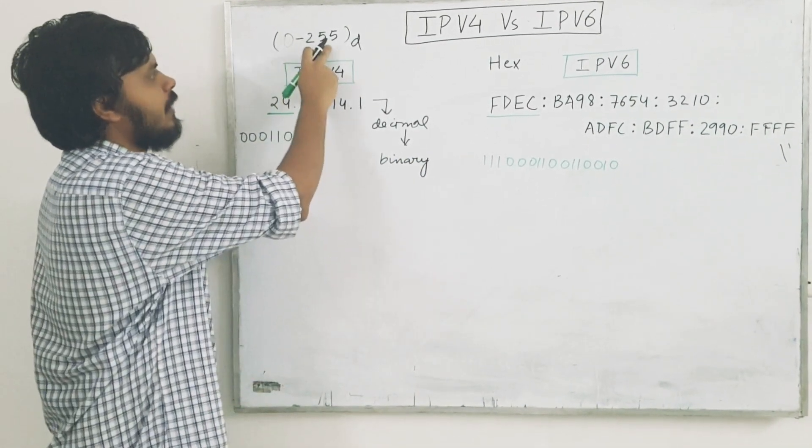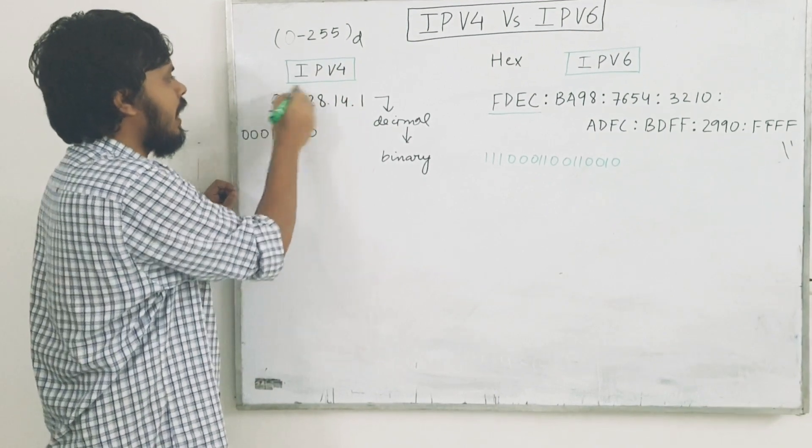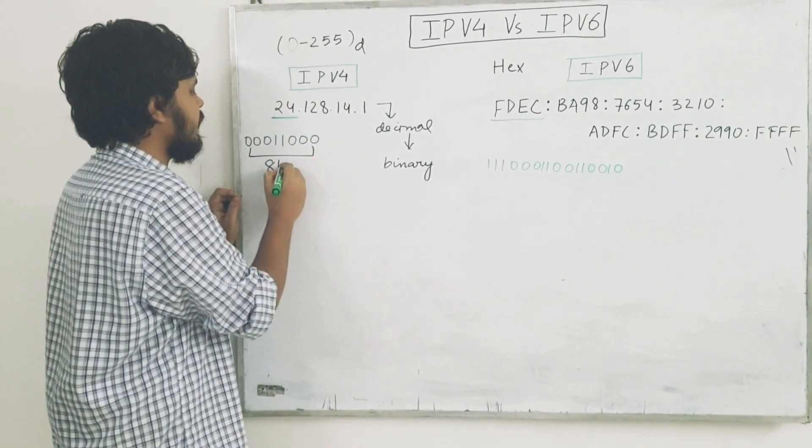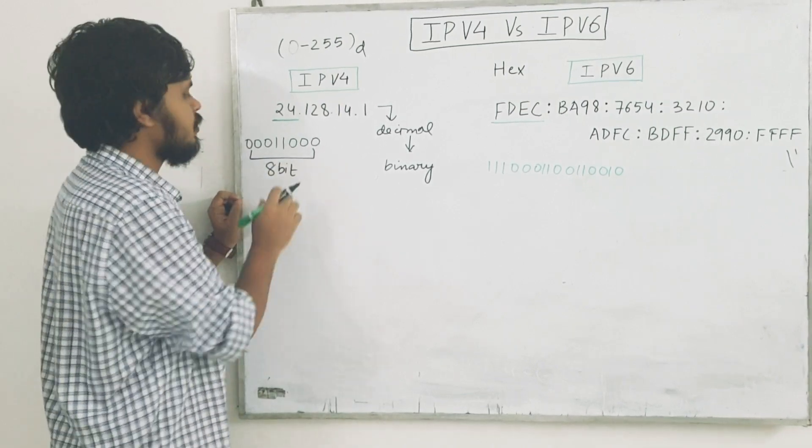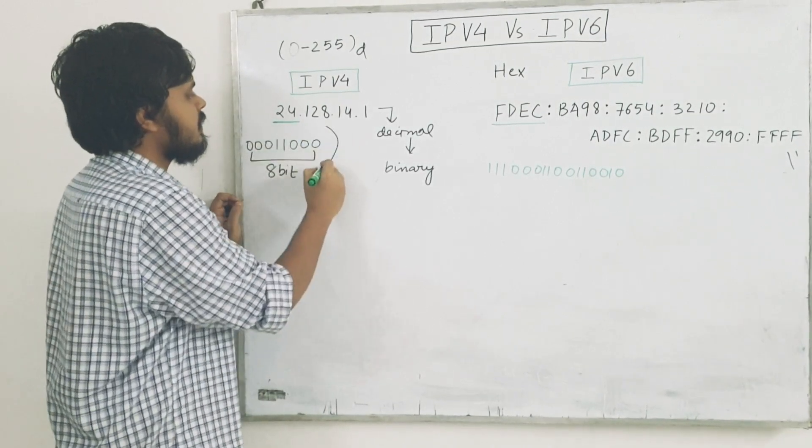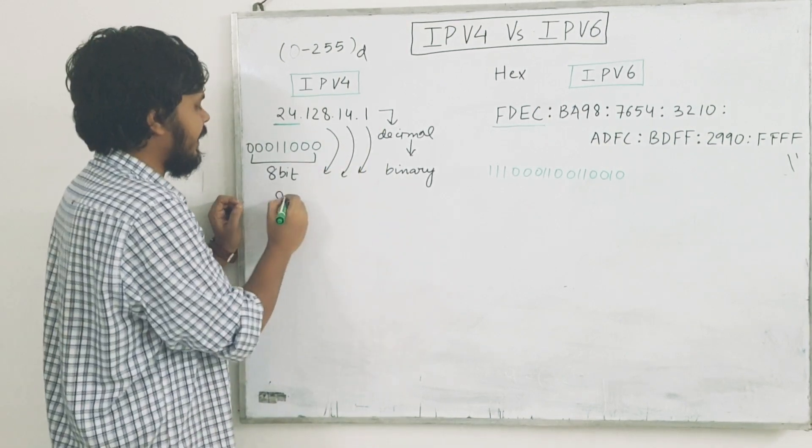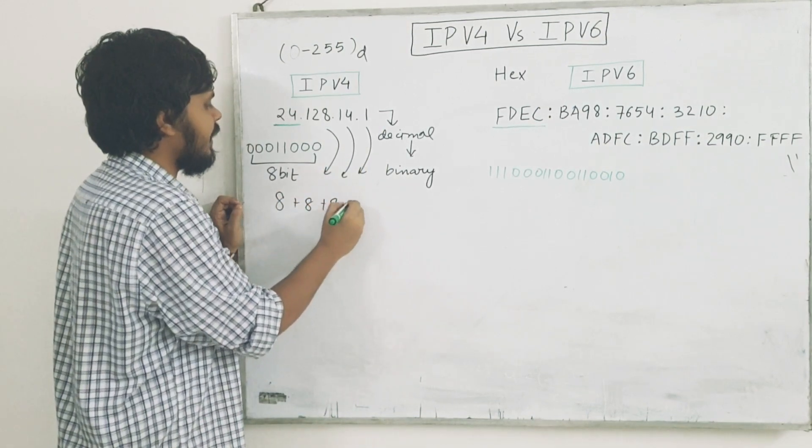Since this is 0 to 255, so this actually, when you have to break down every number in binary, it will create an 8-bit pattern like this. So 8-bit pattern for the first number, similarly one for the second, one for the third and one for the fourth.